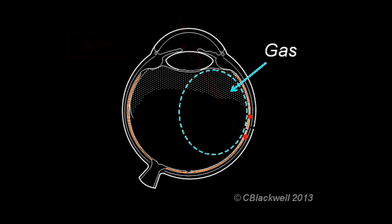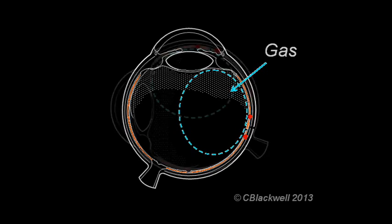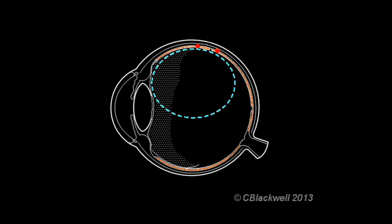Finally, a gas bubble can be instilled to hold the retina in place and keep the tear closed, while the spot welds have a chance to form a strong enough adhesion. Like with the pneumo, the eye has to be positioned so the gas bubble is keeping the hole closed.